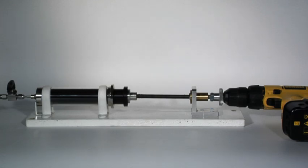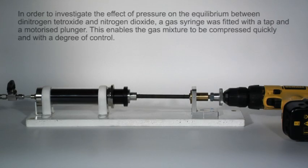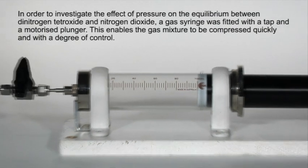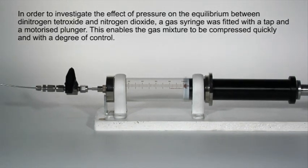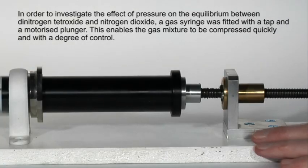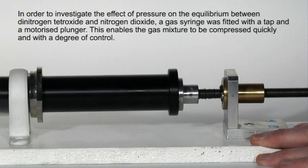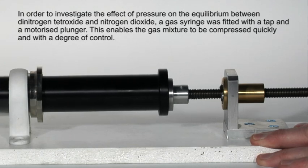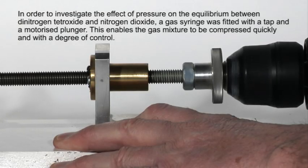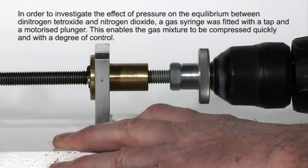The effect of pressure on the equilibrium between dinitrogen tetroxide and nitrogen dioxide can be followed by compressing a mixture in a gas syringe. An electric drill and a threaded rod allows the mixture to be compressed with a fair degree of control.